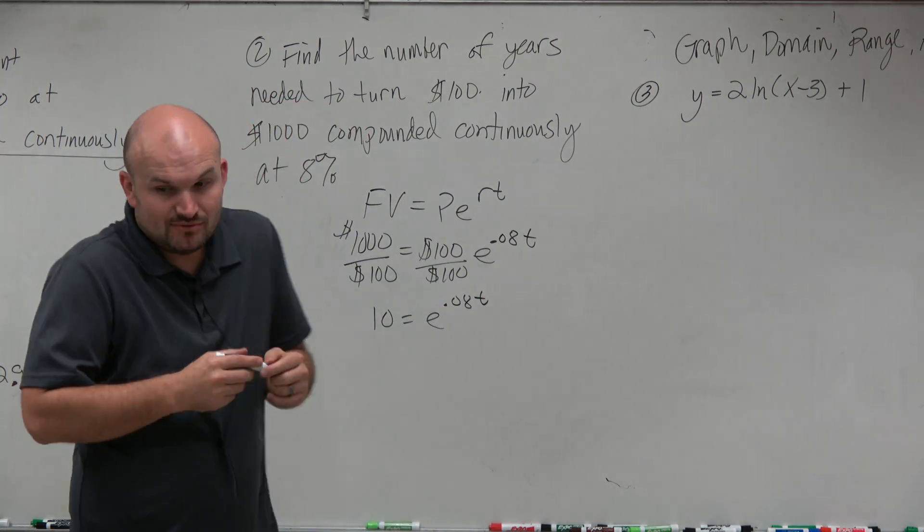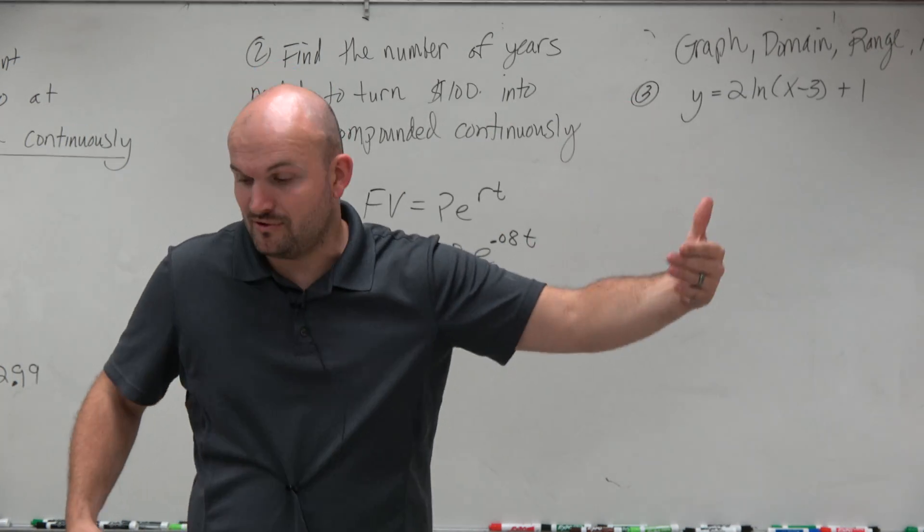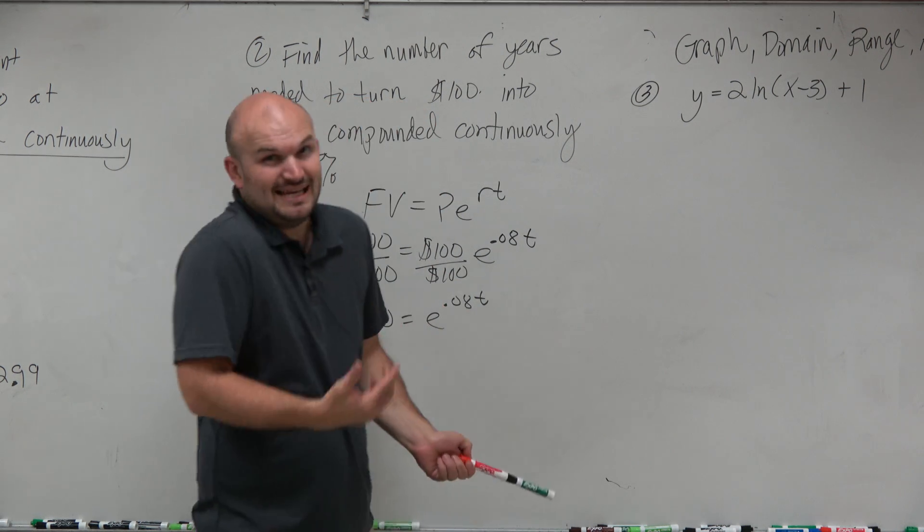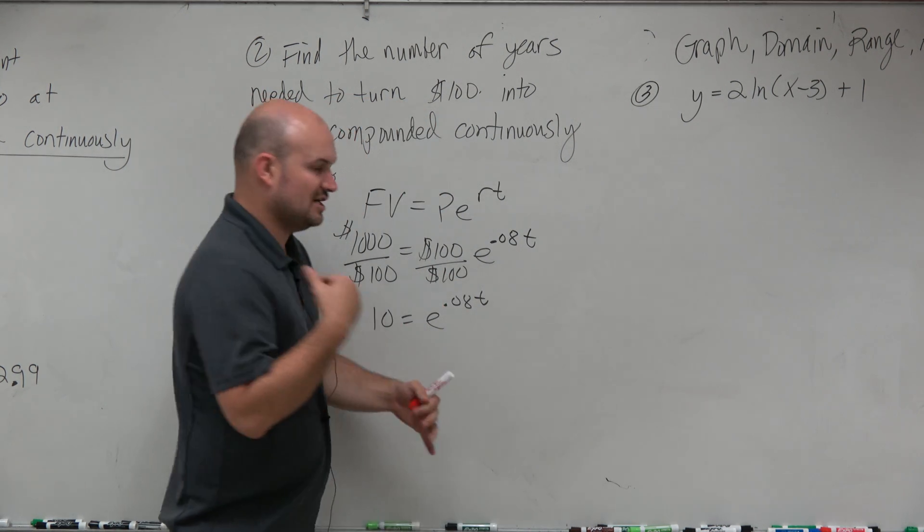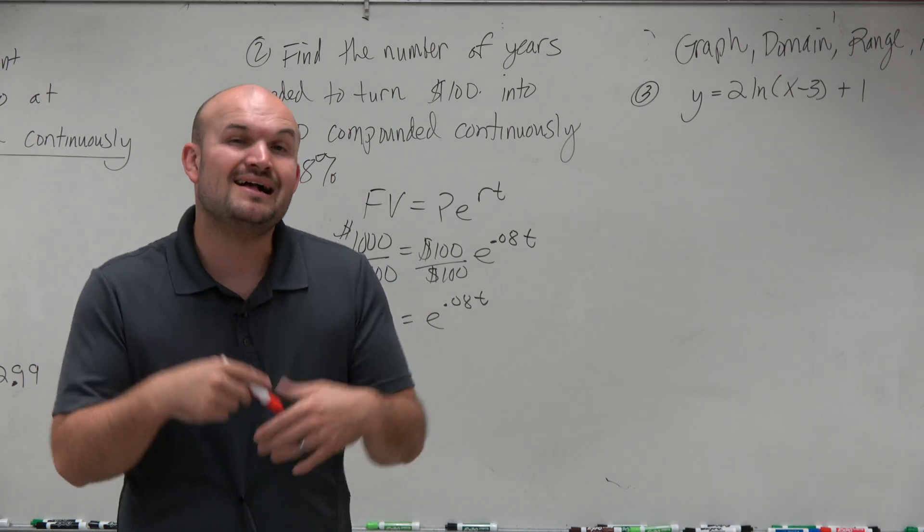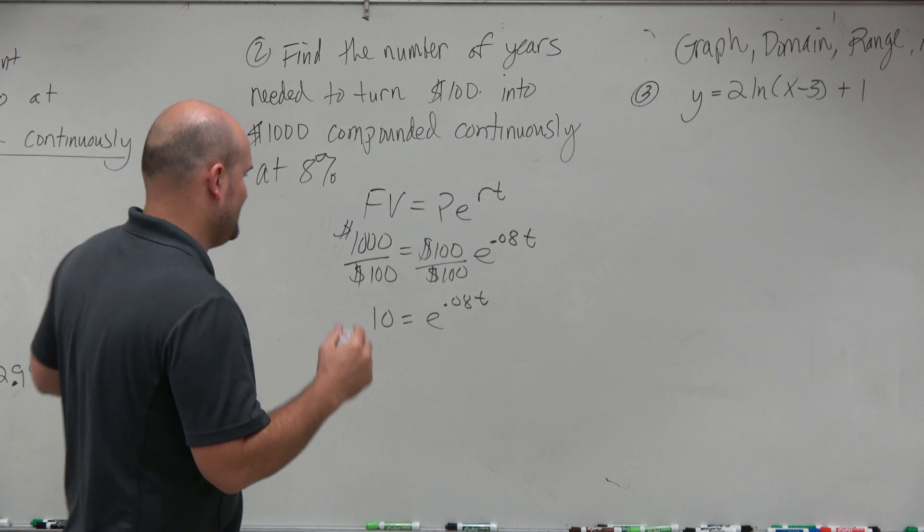Now, to solve for T, we need to undo having T in the power, right? So basically, we have E raised to the 0.08 times T. So we need to undo E. And in my discussion of E and natural logarithms, they are inverses of each other. So therefore, the natural logarithm undoes the operation of E.